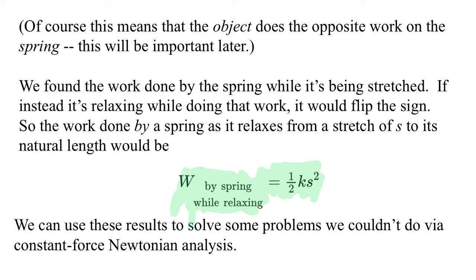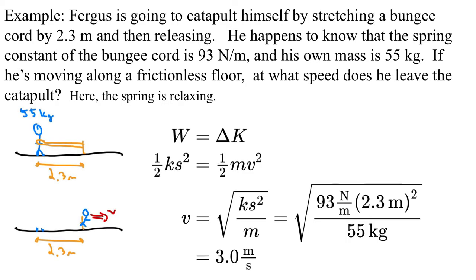And we can use these results to solve some problems that would have been very difficult or impossible using our constant acceleration Newtonian, constant force Newtonian stuff, because we couldn't handle the fact the spring was changing, or at least it would be very awkward because the acceleration would be continually changing, so we couldn't use the constant acceleration equations. We'll do one example, just to say what that looks like. For example, Fergus is going to catapult himself forward by stretching a bungee cord by 2.3 meters and then releasing. He happens to know, because he's done the measurements, that the spring constant of the bungee cord is 93 newtons per meter, and his own mass is 55 kilograms. It's important to understand a bungee cord is certainly not a coiled piece of metal, and it's not really a perfect spring, and it mostly obeys Hooke's law while being stretched.